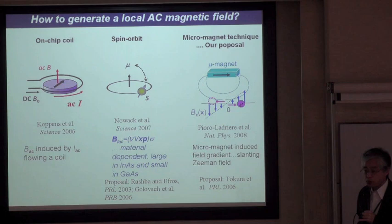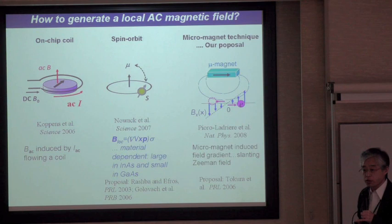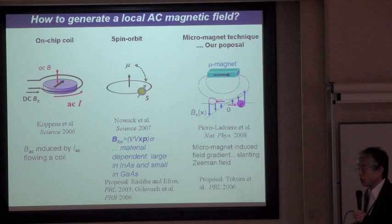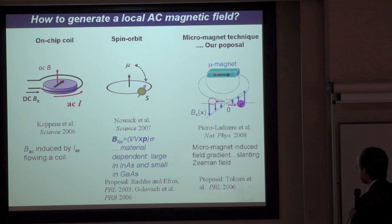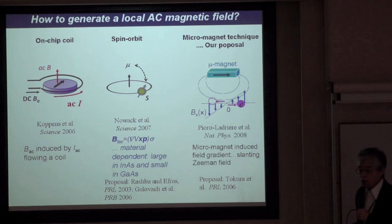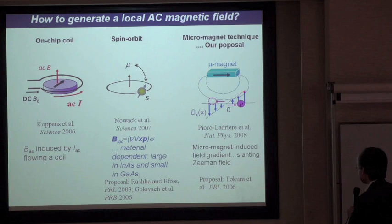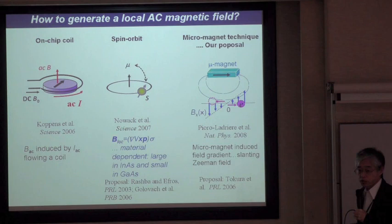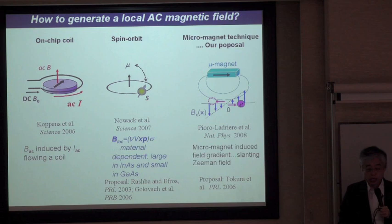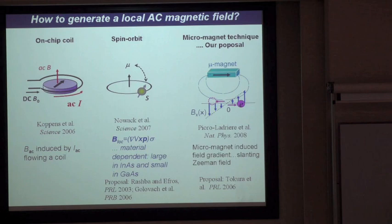Regarding this local magnetic field, our proposal is to use a micro-magnet placed on top of the quantum dot. This micro-magnet generates a stray field when magnetized in-plane. At the position of the quantum dot, the stray field gives a field gradient with near-zero field in the center, higher field to the right, and opposite field to the left. If you swing the electron back and forth, the electron effectively experiences an alternating magnetic field, giving a local AC magnetic field. We have recently demonstrated this operation.